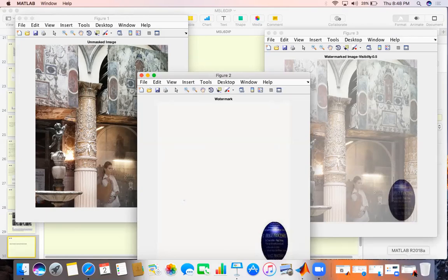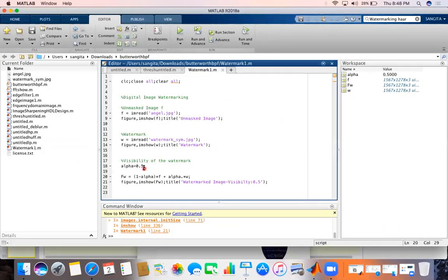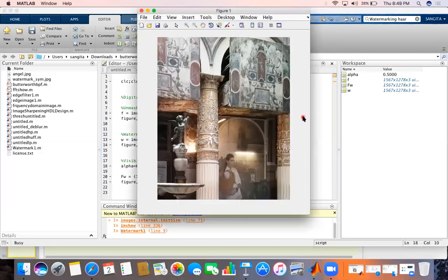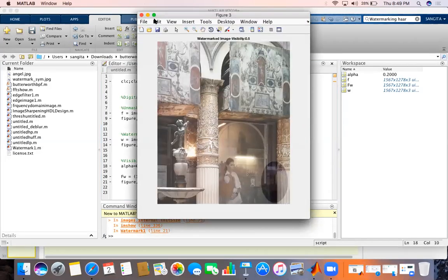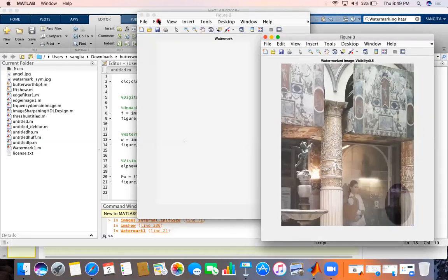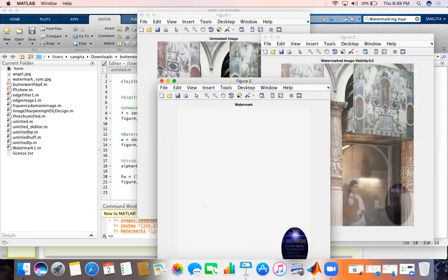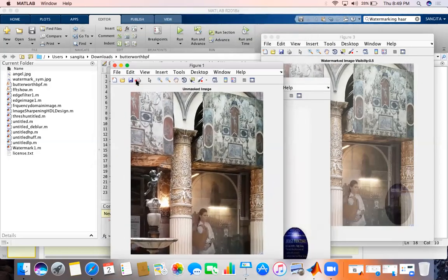Now, controlling the value of alpha, the output can be changed. So I will change 0.5 to 0.2. How the image will be changed? It will be shown clearly over there. Now see, image is more visible and watermark is suppressed over there.